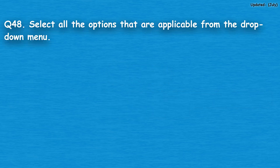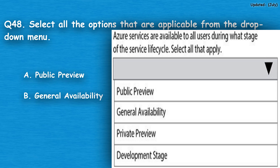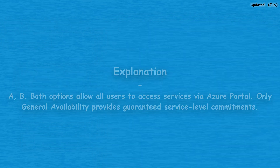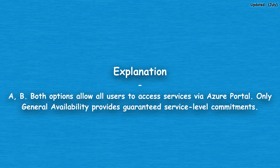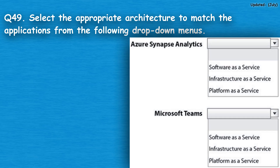Question number 48: Select all the options that are applicable from the drop-down menu. Option A: public preview, option B: general availability, option C: private preview, option D: development stage. The correct answers are option A, public preview, and option B, general availability. Both options allow all users to access services via the Azure portal. Only general availability provides guaranteed service level commitments.